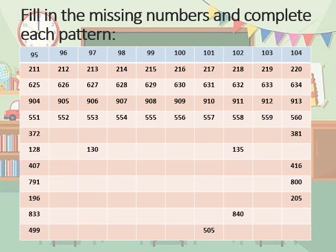Next topic is fill in the missing numbers and complete each pattern. You already know forward counting. In this one, you will add 1 to each number. For example, the first question is 95, then comes 96, 97, 98, 99, 100, 101, 102, 103, and last is 104.